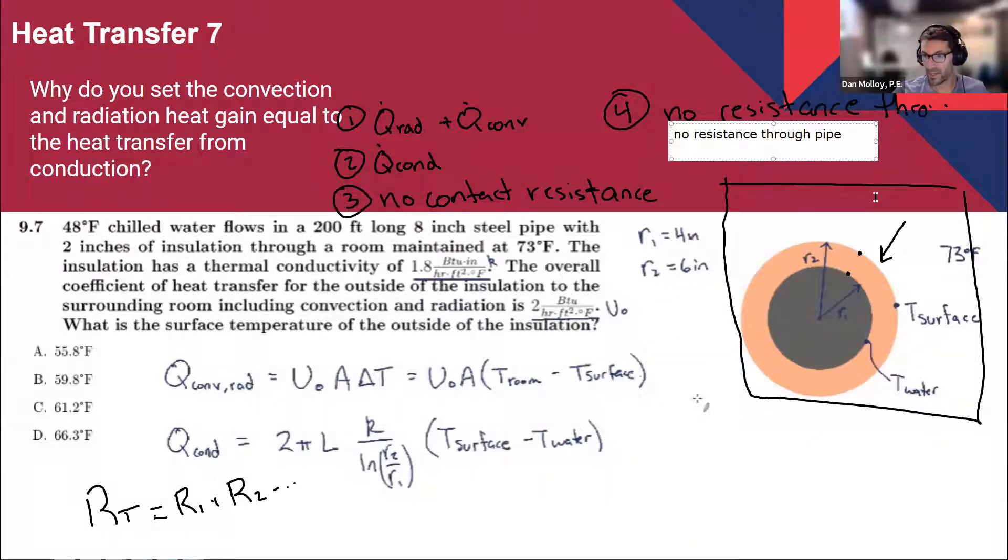And then after the thickness of the pipe, we're finally going to transfer heat into the water itself. And that is convection because we're going from a solid to a fluid. But now I'm making the assumption that that water flow is turbulent and that all of the heat readily finds its way into the water with very little resistance until everything is kind of reaching equilibrium at that level.